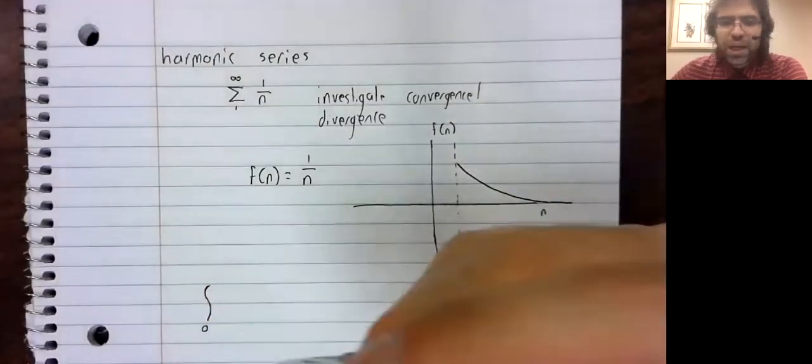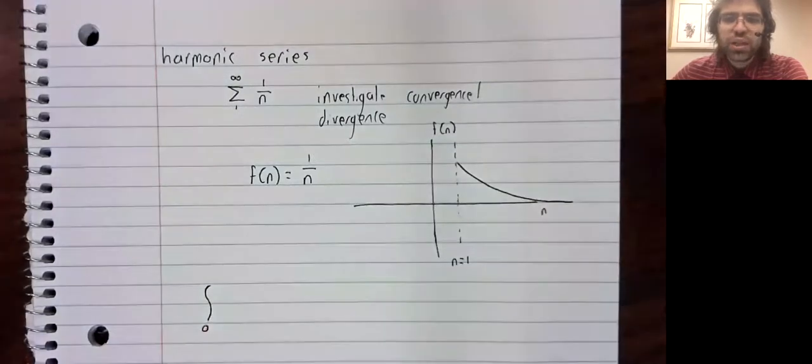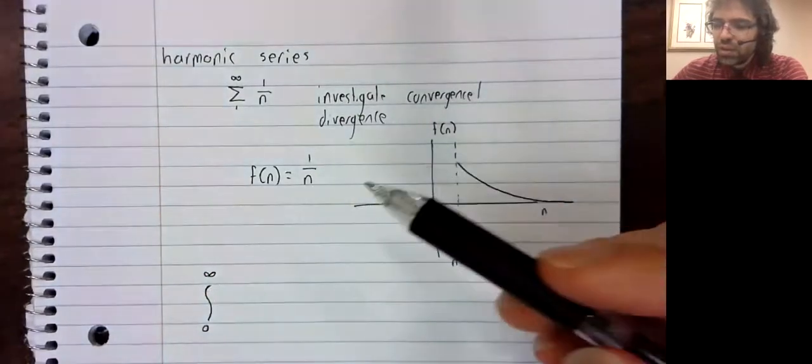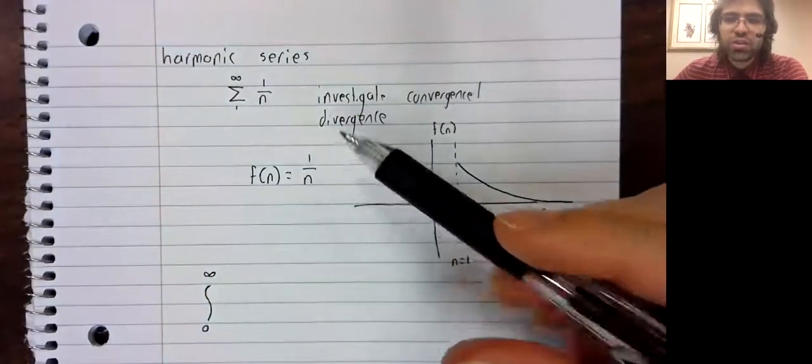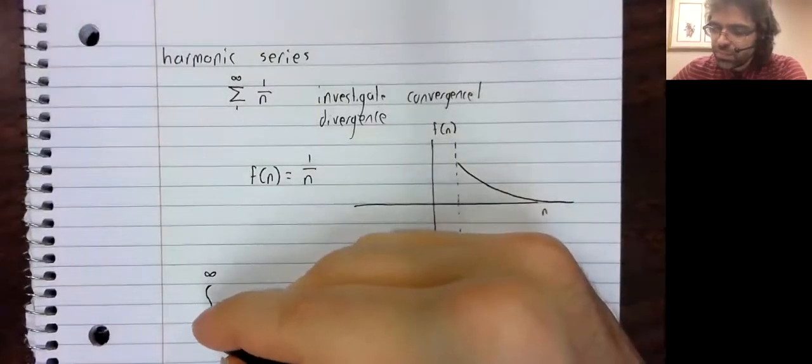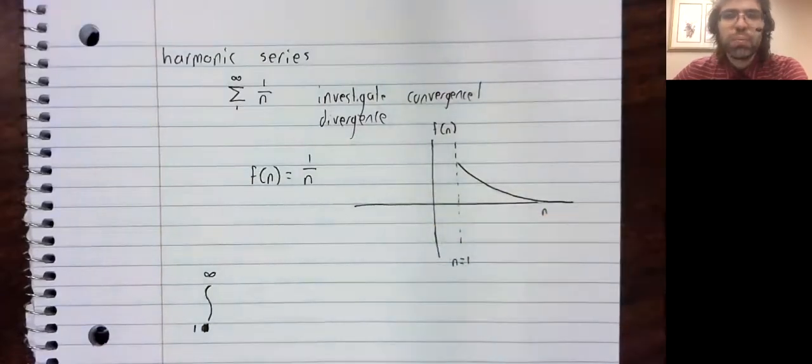A lower bound of zero wouldn't work from zero to infinity. This function is not continuous. But from one to infinity, it is.